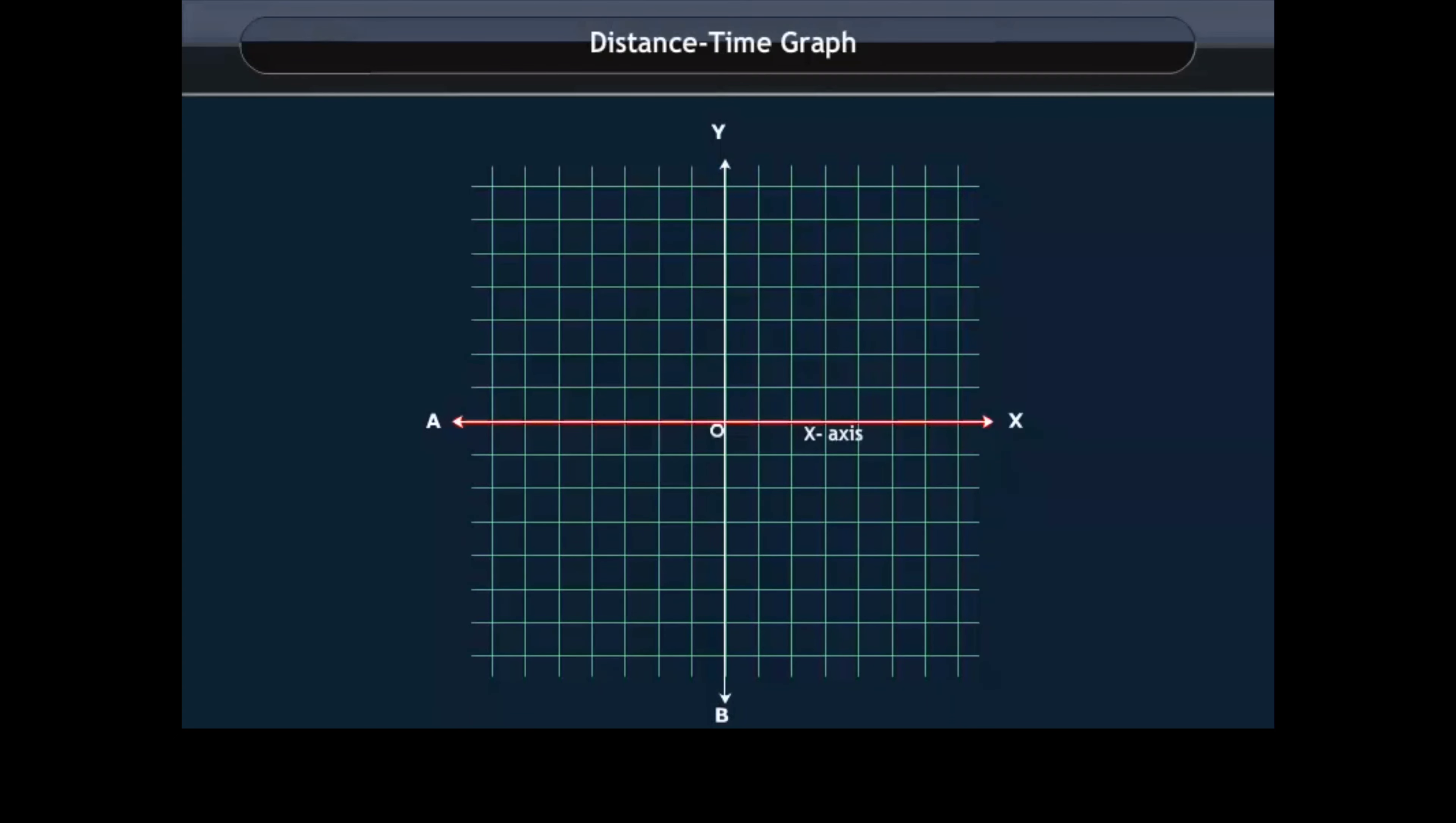Now mark the horizontal line as XOA, which is called the X axis, and the vertical line as YOB, which is called the Y axis. The point of intersection of XOA and YOB is known as origin O.